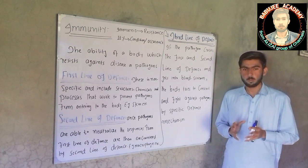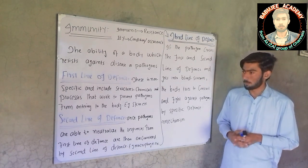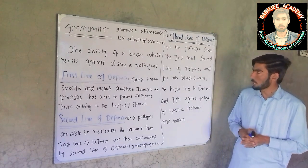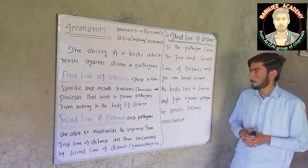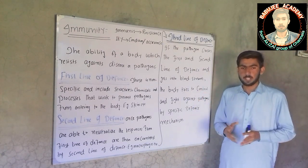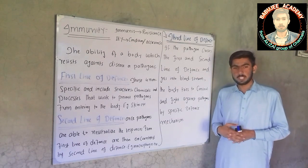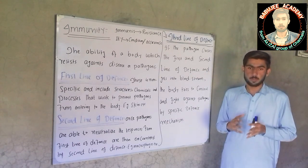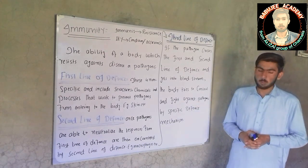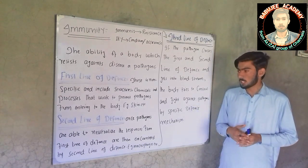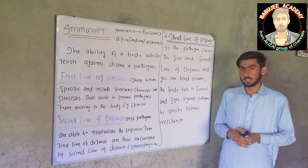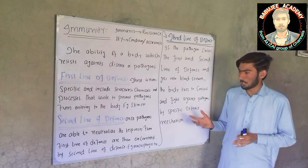Our immunity system works in three mechanisms: first line of defense, second line of defense, and third line of defense. First line of defense is a non-specific mechanism, which means that it cannot differentiate between specific microorganisms. It includes structures, chemicals and processes that work to prevent pathogens from entering the body. An example of first line of defense is skin.